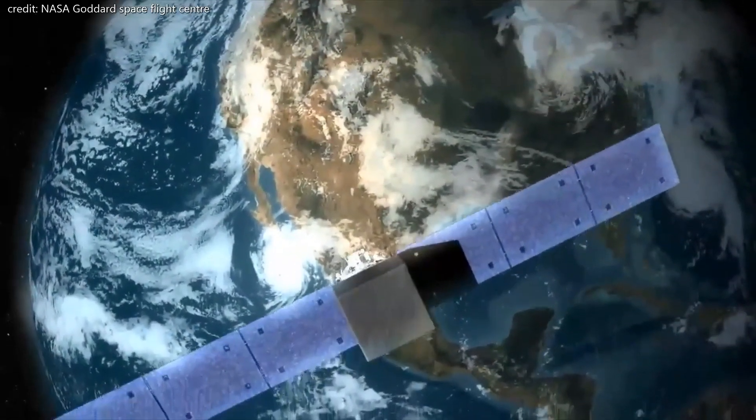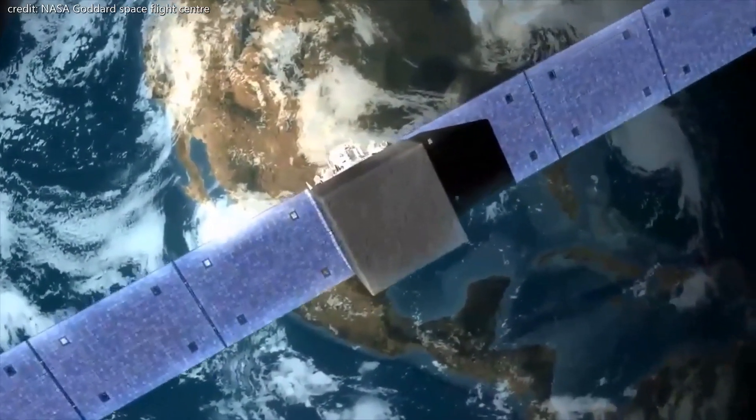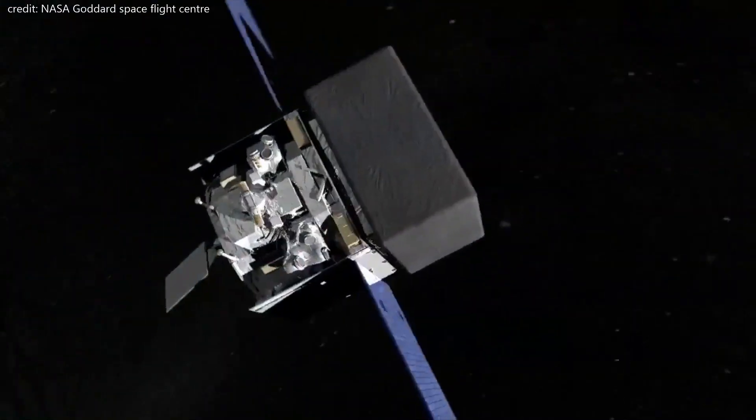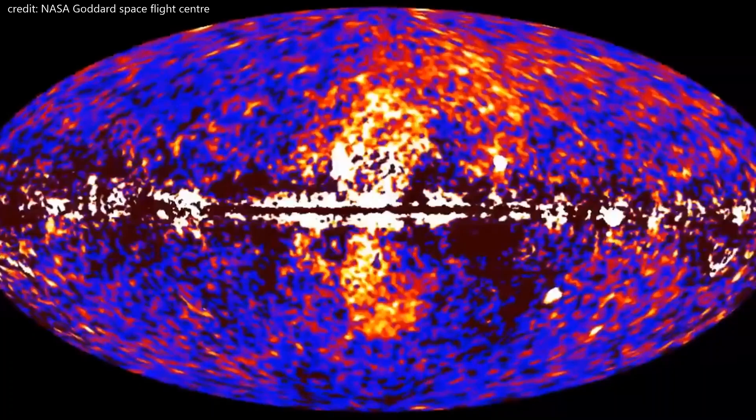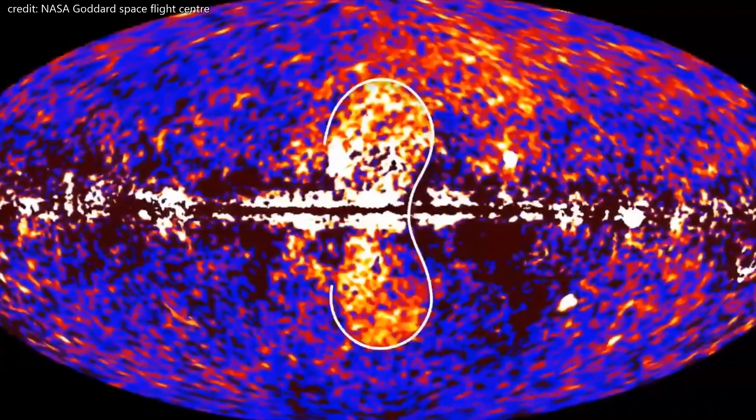In November 2010, astronomers using NASA's Fermi gamma ray space telescope announced an astonishing discovery. Emanating from the center of our Milky Way galaxy are two bubbles made solely of powerful gamma rays.